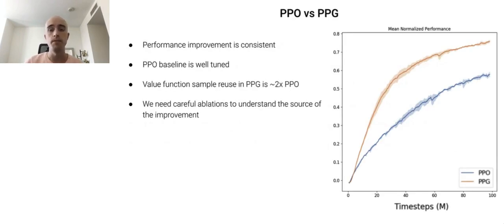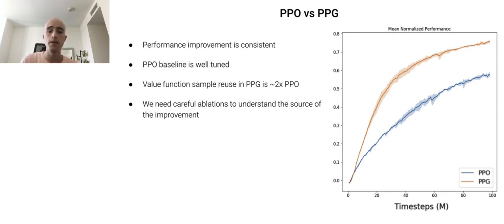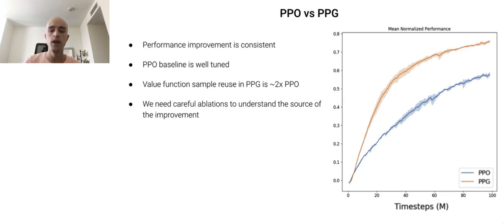Now we'll take a look at the performance of PPG compared to PPO on the environments in ProcGen Benchmark. In blue we show PPO, and in orange we show PPG. This graph shows the mean and standard deviation across three separate runs. It's worth noting that the PPO baseline here is very well tuned — we performed extensive sweeps to choose all hyperparameters. Compared to PPO, PPG uses roughly double the sample reuse to train the value function. However, there are ultimately several critical differences between PPO and PPG, so it's not immediately clear that the extra value function sample reuse must be responsible for the performance improvement. To understand the source of improvement, we'll dive into some more detailed ablations in the coming slides.